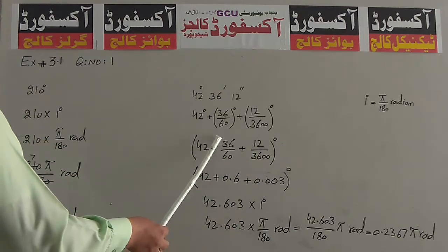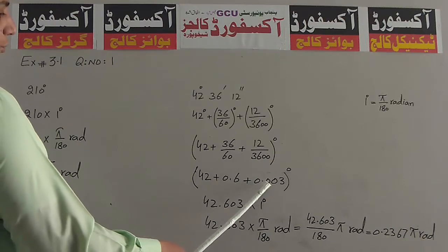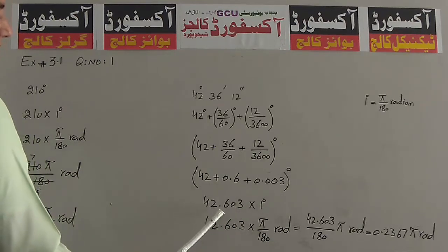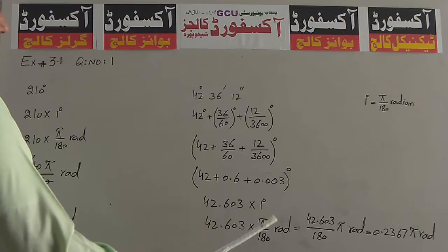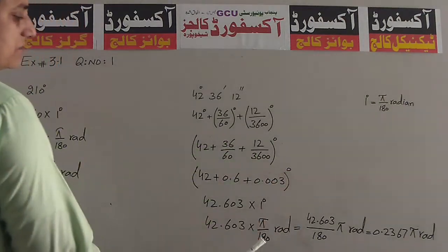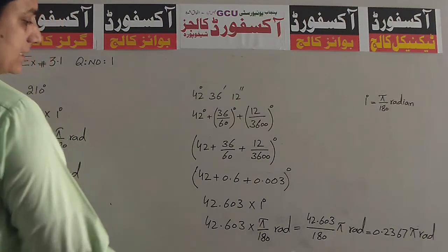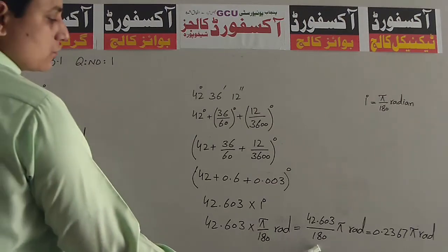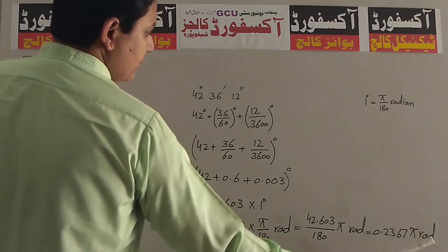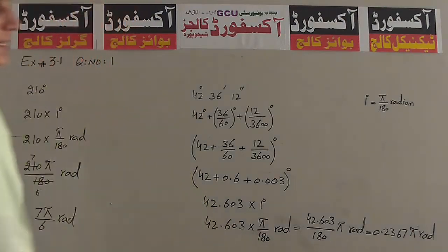42 + 36/60 = 0.6, plus 12/3600 = 0.003, तो यह होगा 42.603 degree. अब degree का formula लिखेंगे: Pi/180 Radian. तो 42.603 × Pi / 180 = 0.23675 Radian. यह हमने degree, minute और second वाली जगह की value को Radian में तब्दील कर दिया है.